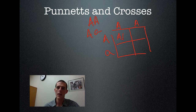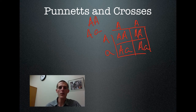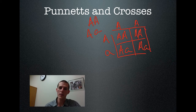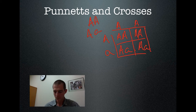So filling in the Punnett square, all combinations come out as big A big A or big A little a. From this cross, half the kids are going to be homozygous dominant and half the kids are going to be heterozygous.